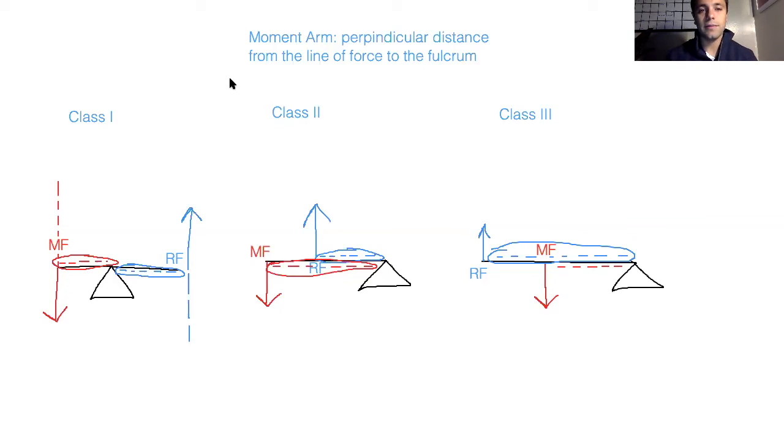So just for final review, the moment arm is a perpendicular distance from the line of force to the fulcrum. Whereas when we see MF or RF, those are the forces themselves. The muscle force that our body is creating, and the resistive force being whatever external load resistance that we're moving. And again, the fulcrum is kind of like that pivot point or that axis of rotation.